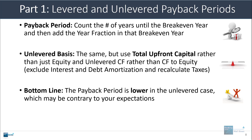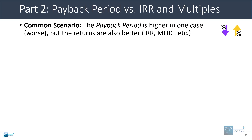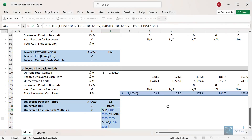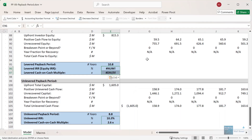This probably doesn't match your expectations — you were probably expecting a higher payback period in the unlevered case. Let's discuss why that happened and what the IRR and multiples can tell us. We get a very common outcome: the payback period is higher in one case, which is worse, but the returns are also better in that case. If we go back down and copy the IRR and cash on cash multiple formulas up here, linking in the total cash flow to equity so it references the correct row, we can see the comparison.